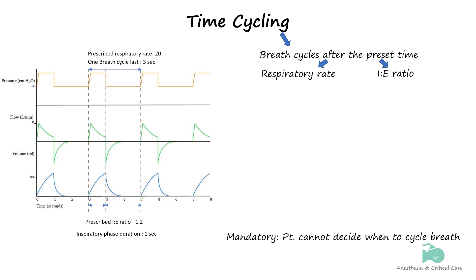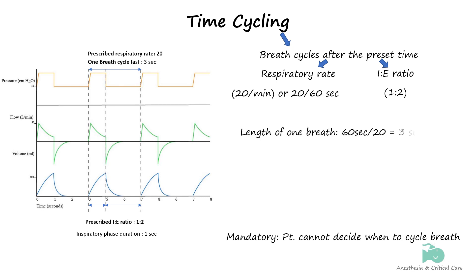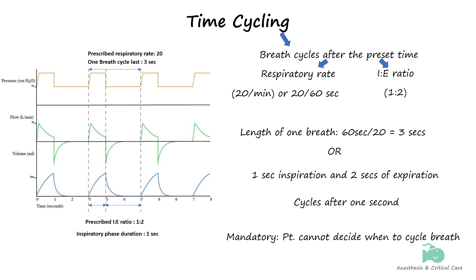For instance, when one has a respiratory rate of 20 and an inspiratory-to-expiratory ratio of 1:2, it is understood that from a total 3-second breath cycle, the inspiratory phase will last 1 second. In other words, after 1 second the ventilator will terminate inspiratory flow and cycle to expiration.